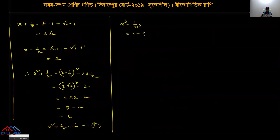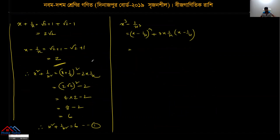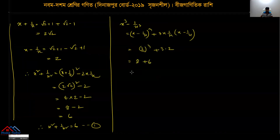Now find x³ - 1/x³. The formula is a³ - b³ = (a - b)³ + 3ab(a - b). Substituting: (1 - 1)³ + 3 × x × (2√2), we get (2√2)³ = 8, and the value becomes 8 + 3×1×2 = 14.